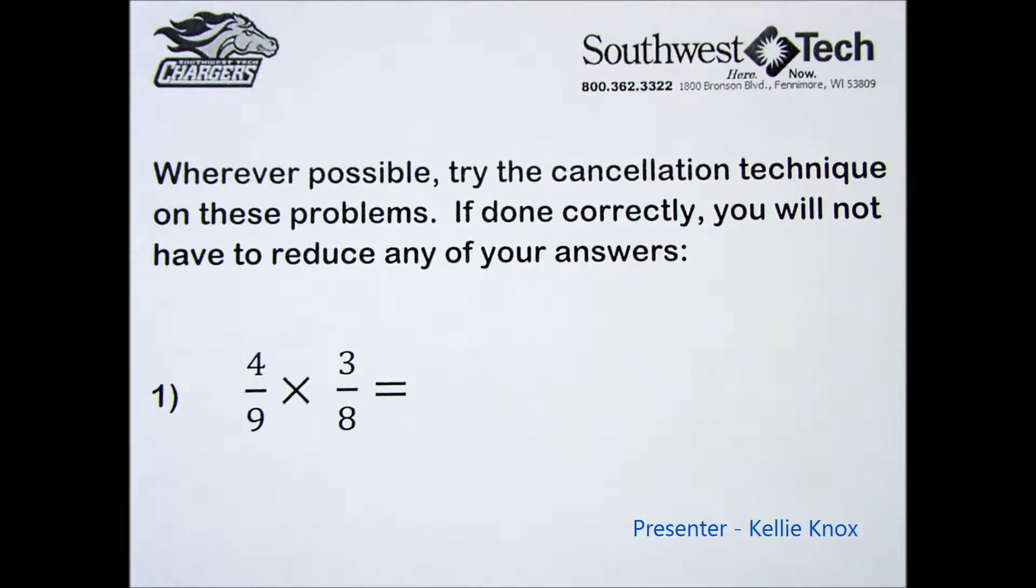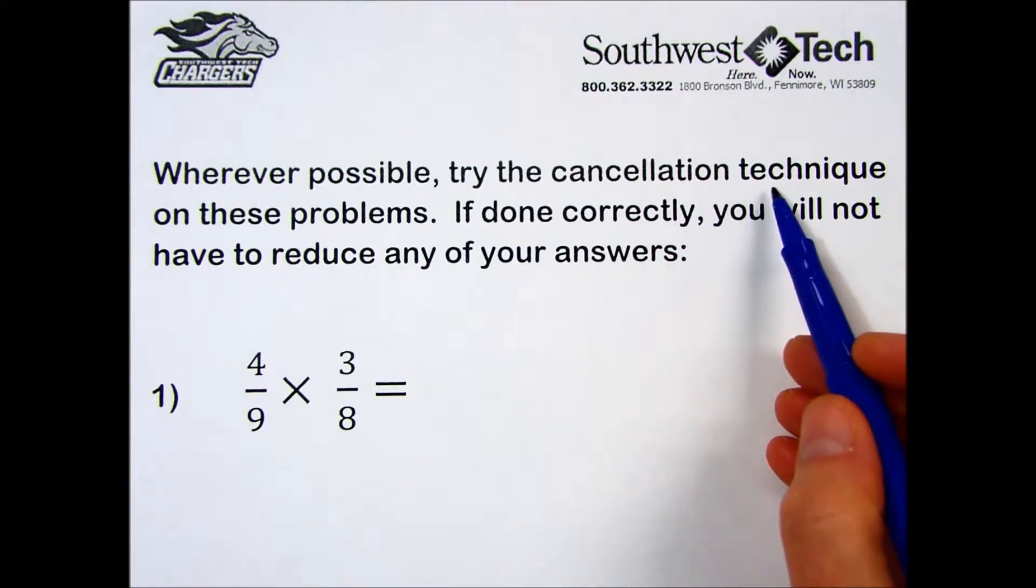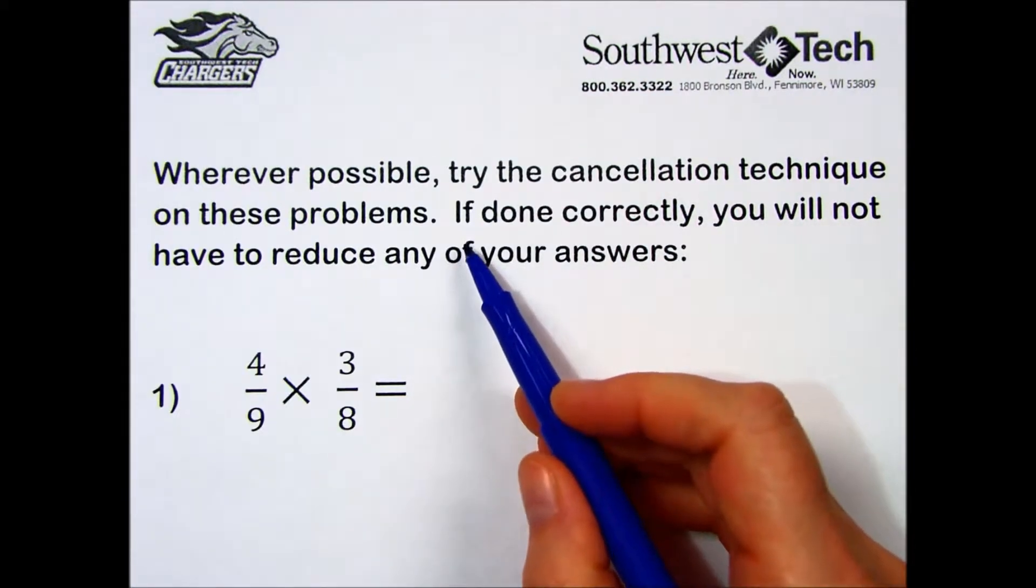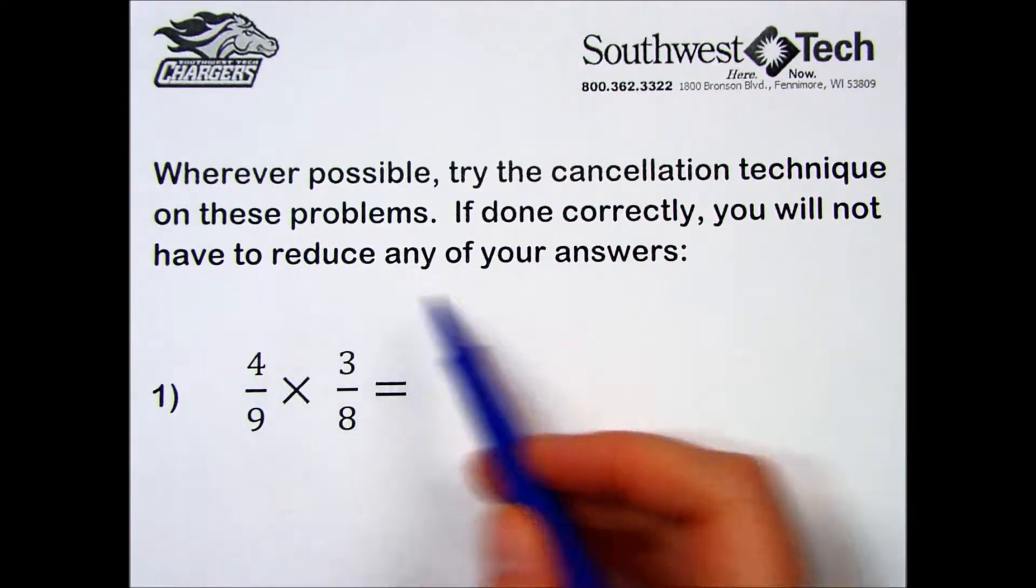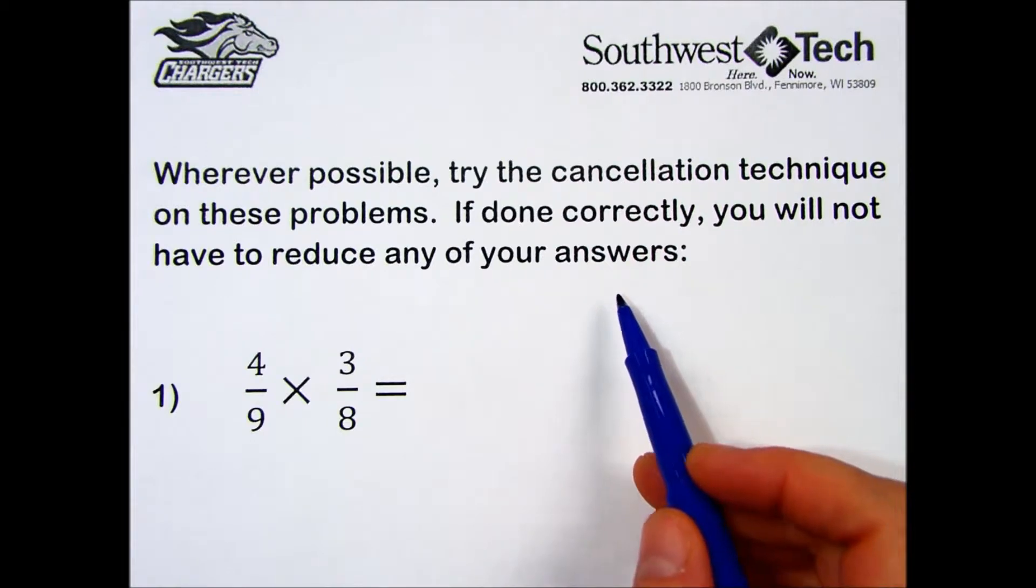In practice 1-9, we are multiplying fractions with an optional technique called cancellation. The directions say wherever possible, try the cancellation technique on these problems. If done correctly, you will not have to reduce any of your answers.